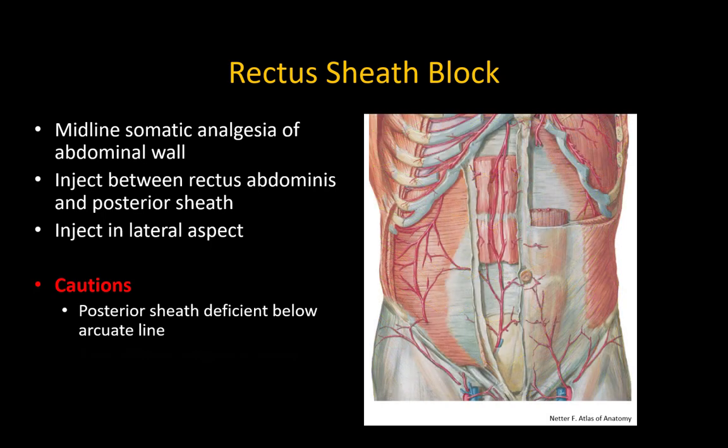In the infraumbilical area, the deep inferior epigastric artery lies in the plane under the rectus abdominis muscle, although usually in the medial half. It serves as an important landmark to the correct fascial plane, but obviously should be avoided.